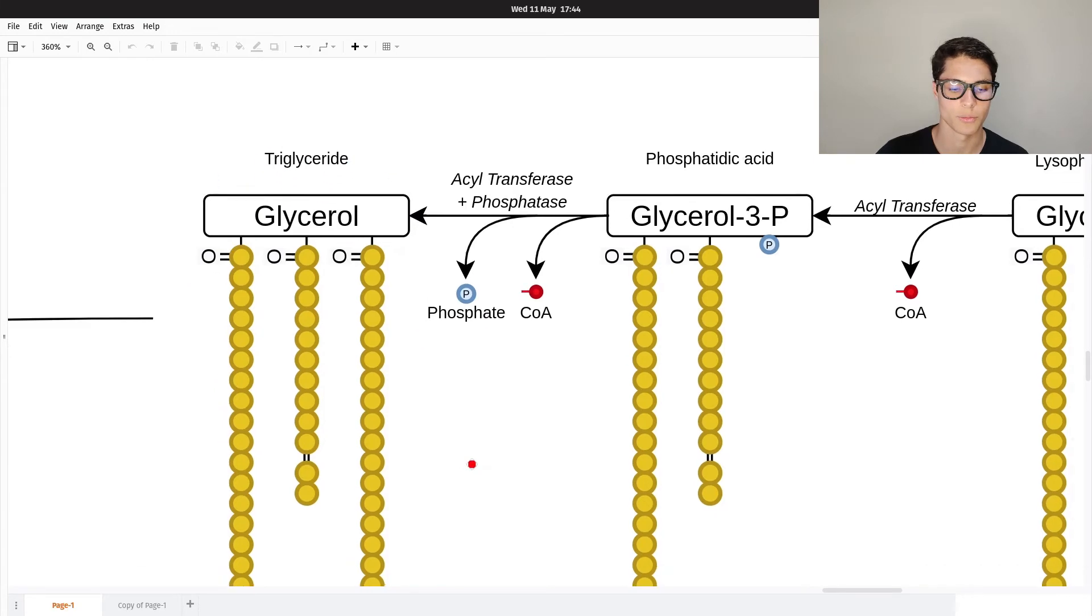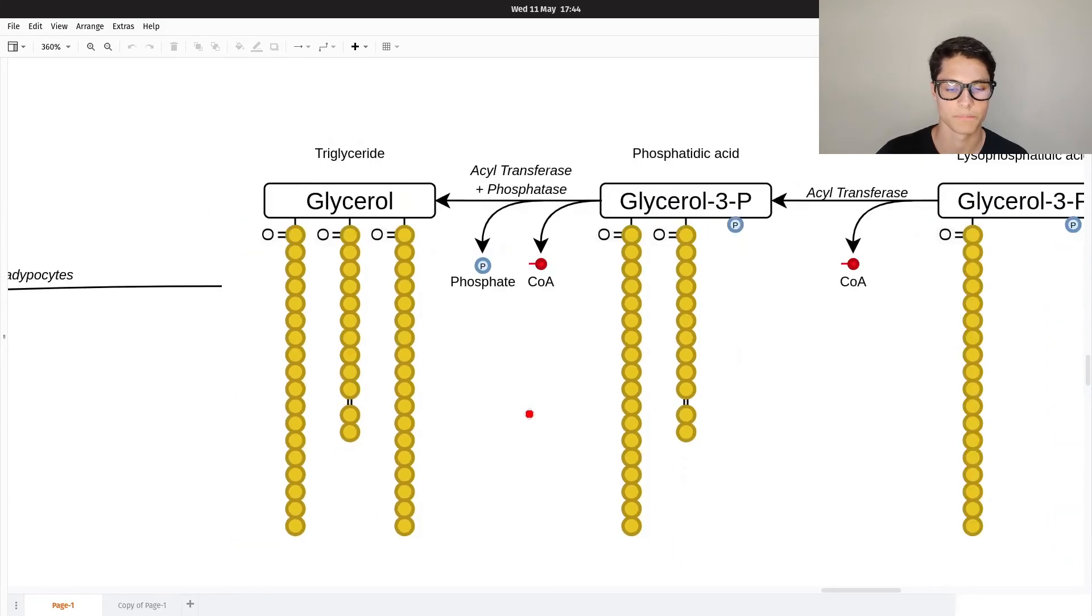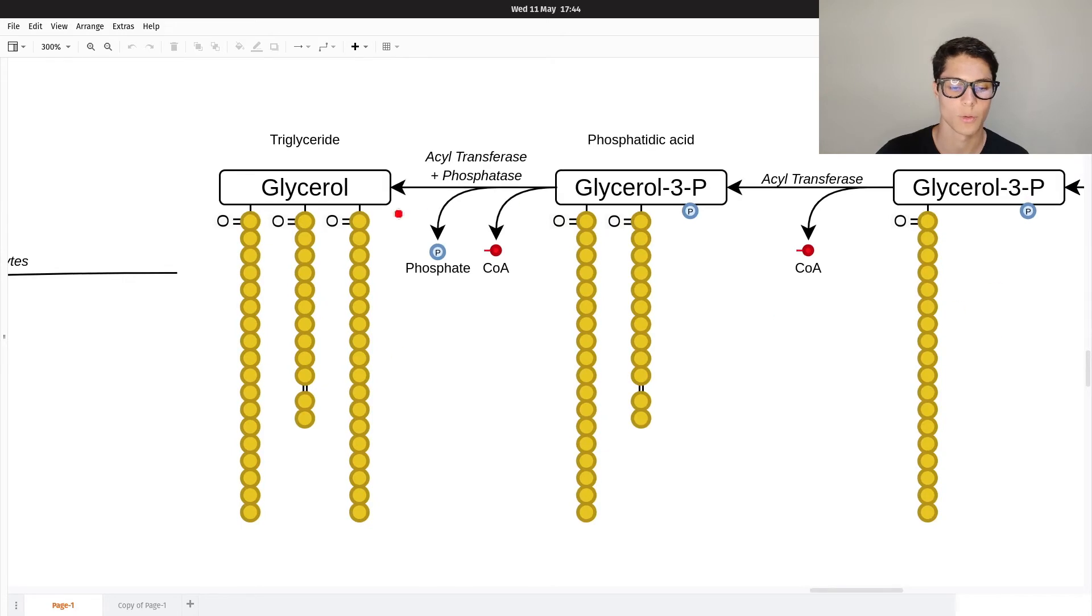This is the final triglyceride we were talking about earlier. It's adding one fatty acid at a time using the acyl transferase, getting rid of the CoA, and in the final step we get rid of the phosphate using a phosphatase.